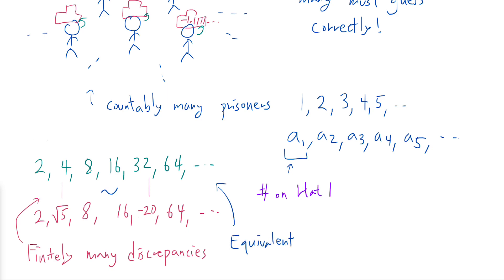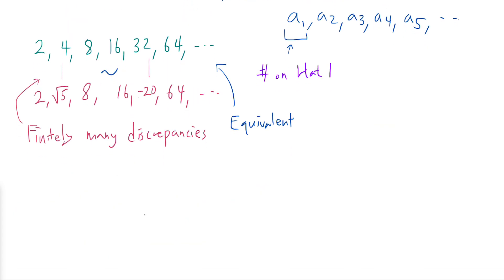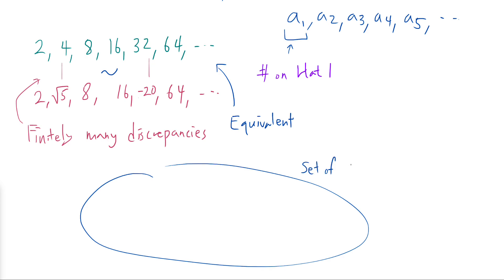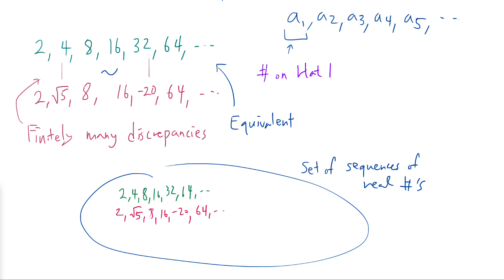For example, if I also consider powers of 3 — like 3, 9, 27, 81, and so on — then this sequence and the powers-of-2 sequence are fundamentally different. We cannot go from one to the other by changing only finitely many things, so these two would not be equivalent. Now, if you consider all possible sequences of real numbers — imagine this gigantic set — one possible element is 2, 4, 8, 16, 32, 64; another is 2, square root of 5, 8, 16, minus 20, 64; and there are also the powers of 3: 3, 9, 27, 81, 243, and so on.